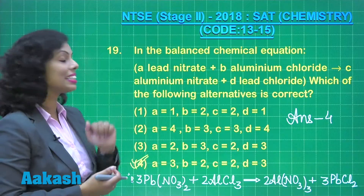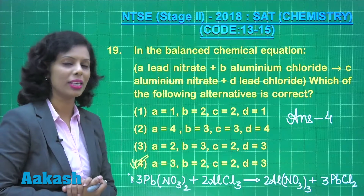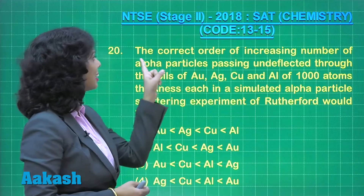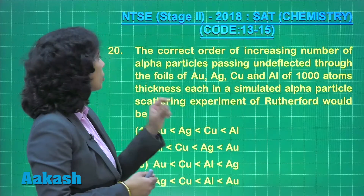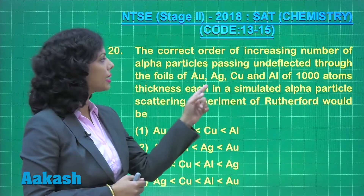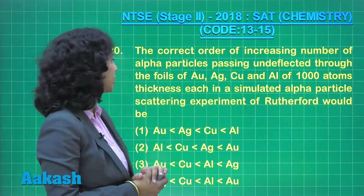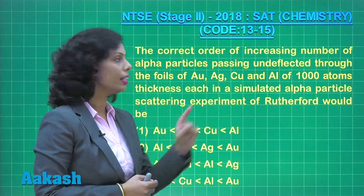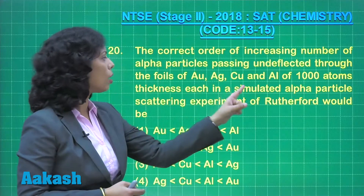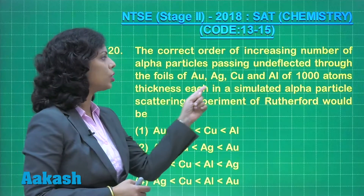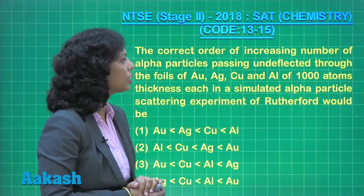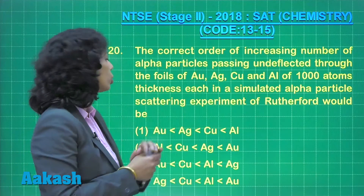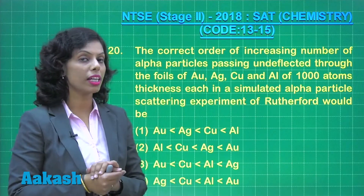Now let's move to question number 20. It states: what is the correct order of increasing number of alpha particles passing undeflected through foils of gold, silver, copper, and aluminum — each of 1000 atoms thickness — in a simulated alpha particle scattering experiment of Rutherford?